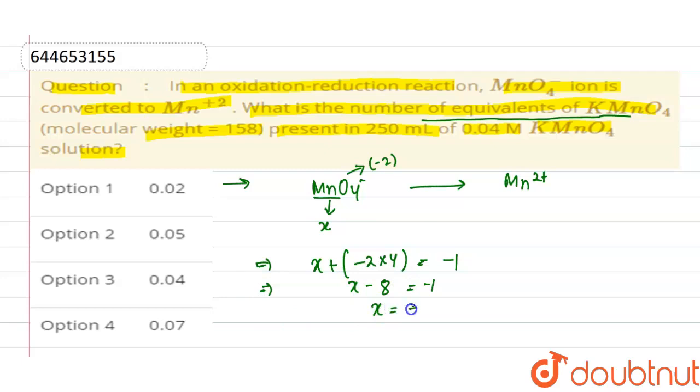x comes out to be +7. From here we conclude that Mn⁺⁷ is converted into Mn²⁺.